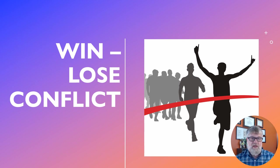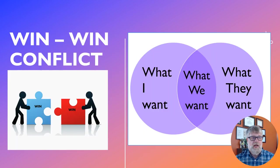Win-lose conflict means there's a winner and a loser — think about a race where only one person wins. People who are losing have an incentive to pull the winner down. Win-win conflict happens when both parties advance what they want and cooperate so that each gets a little of what they want. That's obviously the best outcome for most conflict situations.